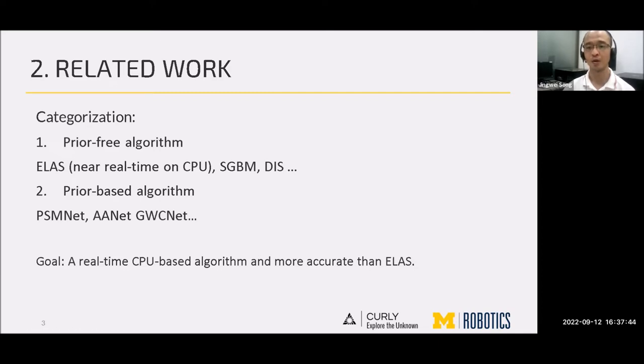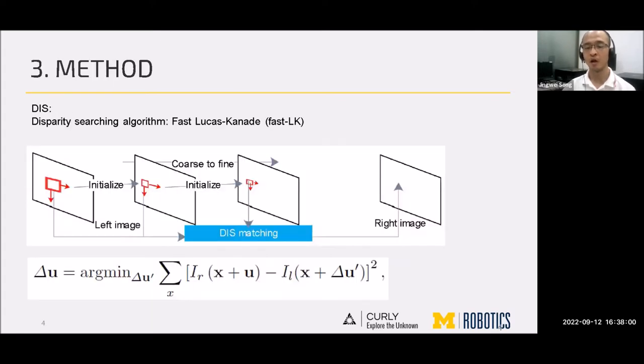ELAS on CPU requires around 0.2 to 1 second on a single modern CPU core. Thus, the goal of this paper is a real-time CPU-based algorithm more accurate than ELAS. Our work is based on dense inverse searching algorithm, DIS, which achieves real-time implementation.